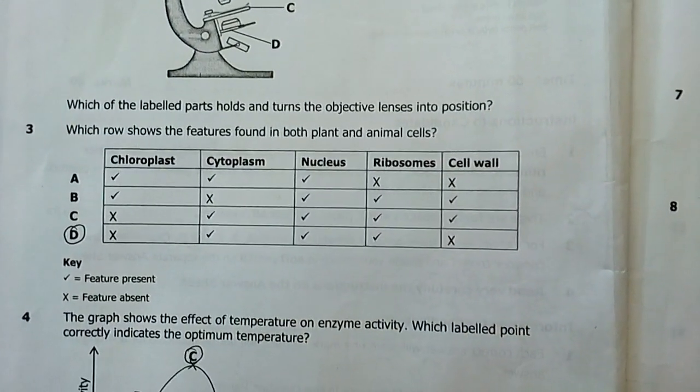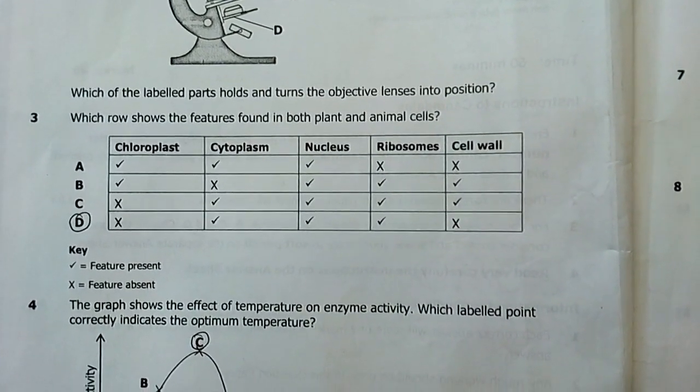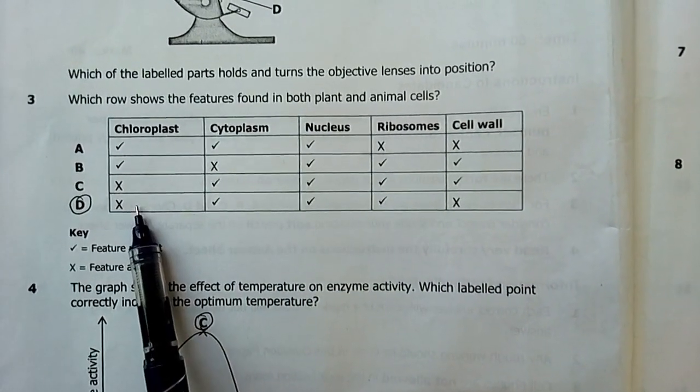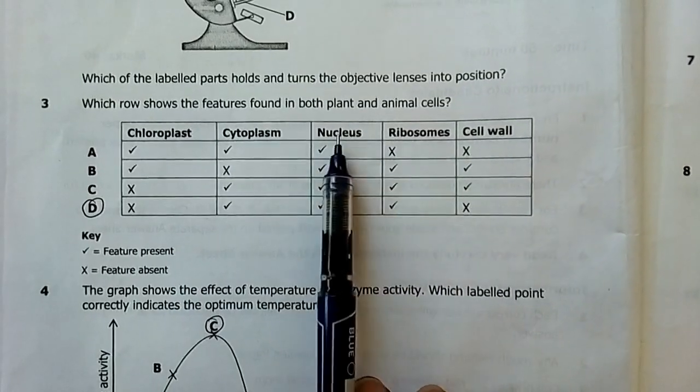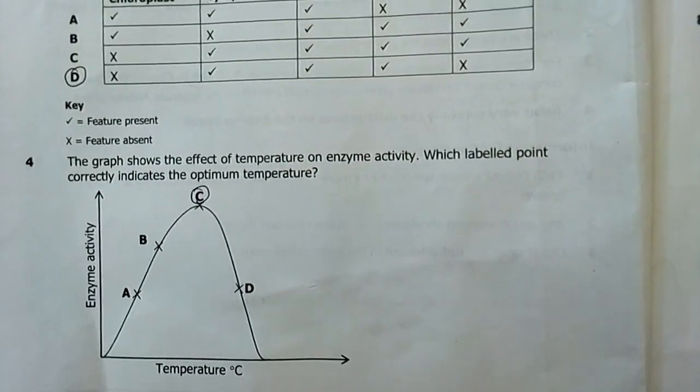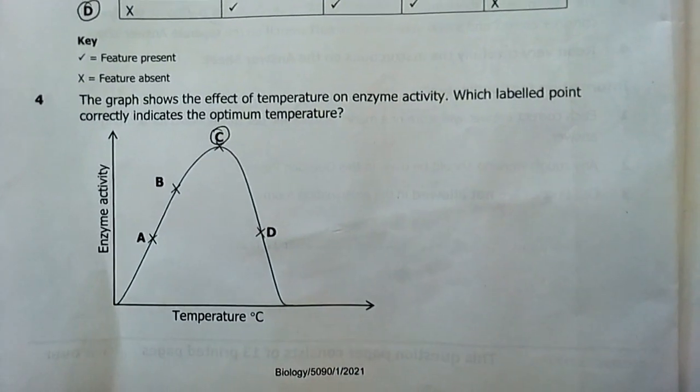Number three, which row shows the features found in both plants and animals? My answer was D, both in plants and animals. Chloroplast is not found in both. Cell wall is not found in both. Ribosomes, nucleus, cytoplasm, they are found in both. Though they may differ in structure a little bit, but they are found in both.